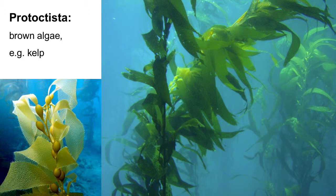Even though kelp really looks like a plant, it is not a plant, and not even very closely related to them. It is much more closely related to the unicellular diatoms that you just saw the skeletons of. The next two groups I'm going to show you, the amoebas and the slime molds, are part of a group thought to be closely related to the group containing the fungi and animals.